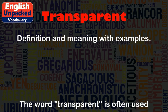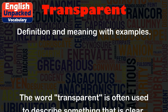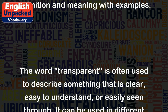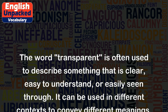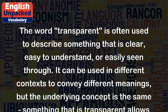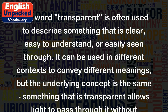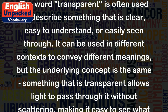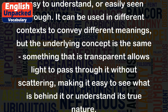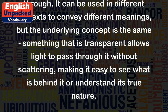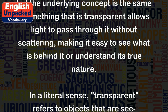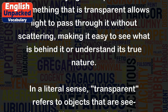The word transparent is often used to describe something that is clear, easy to understand, or easily seen through. It can be used in different contexts to convey different meanings, but the underlying concept is the same. Something that is transparent allows light to pass through it without scattering, making it easy to see what is behind it or understand its true nature.